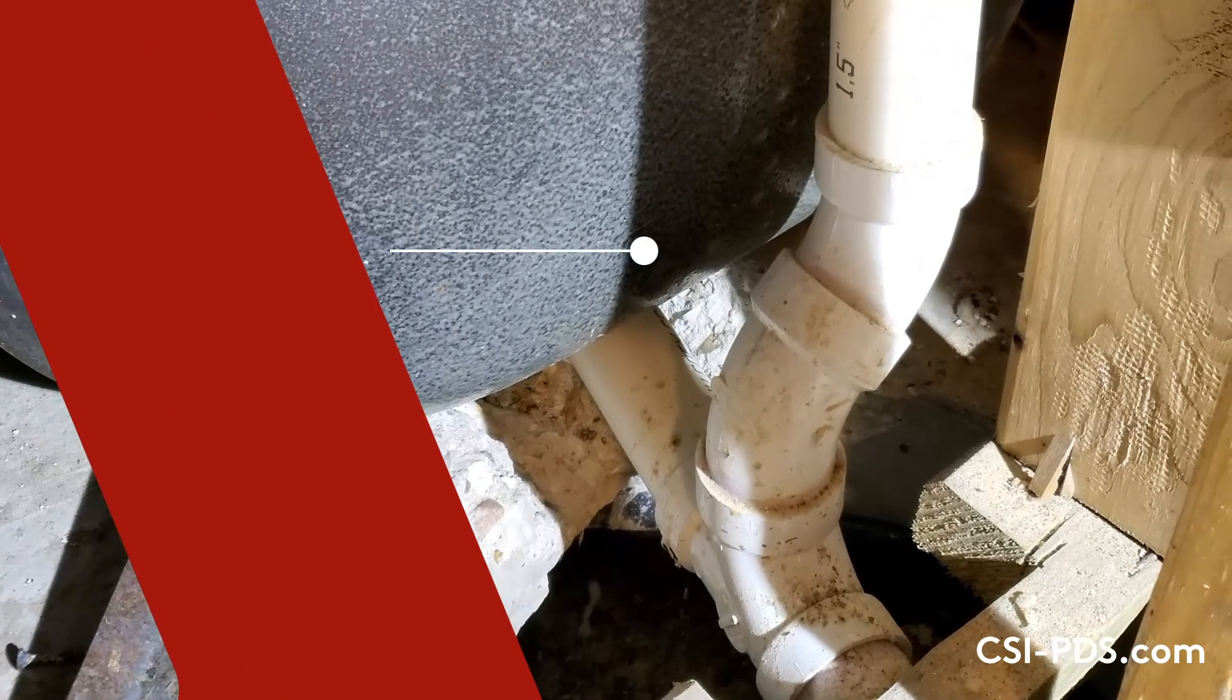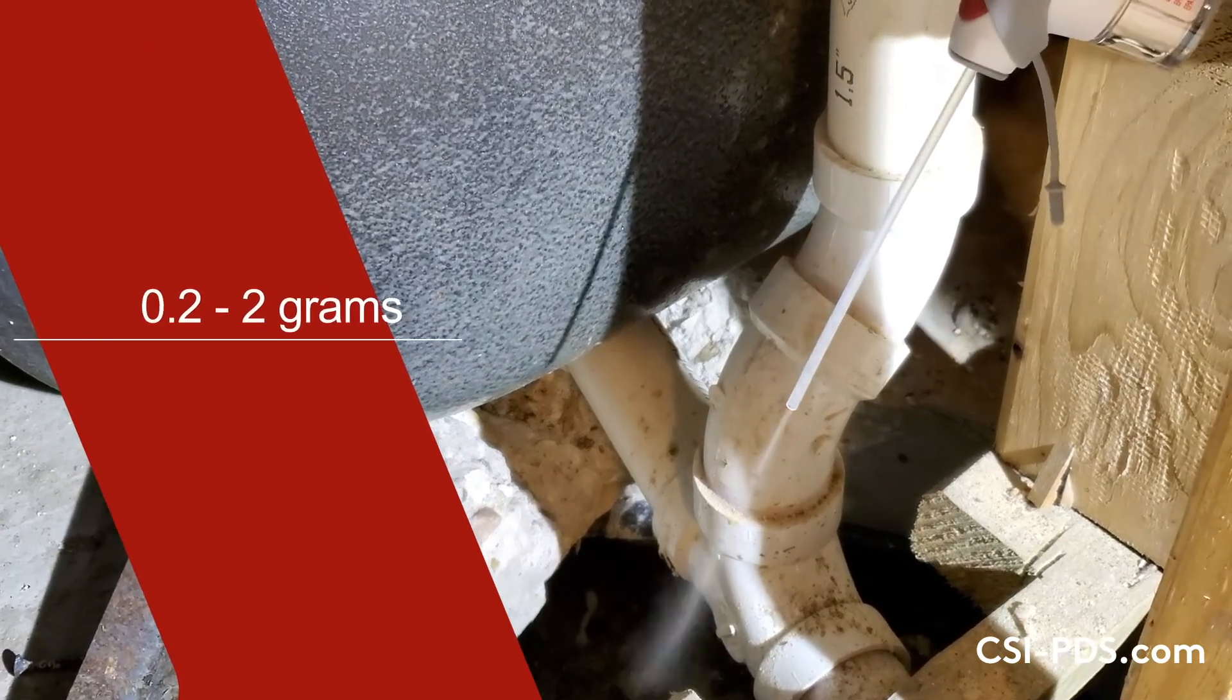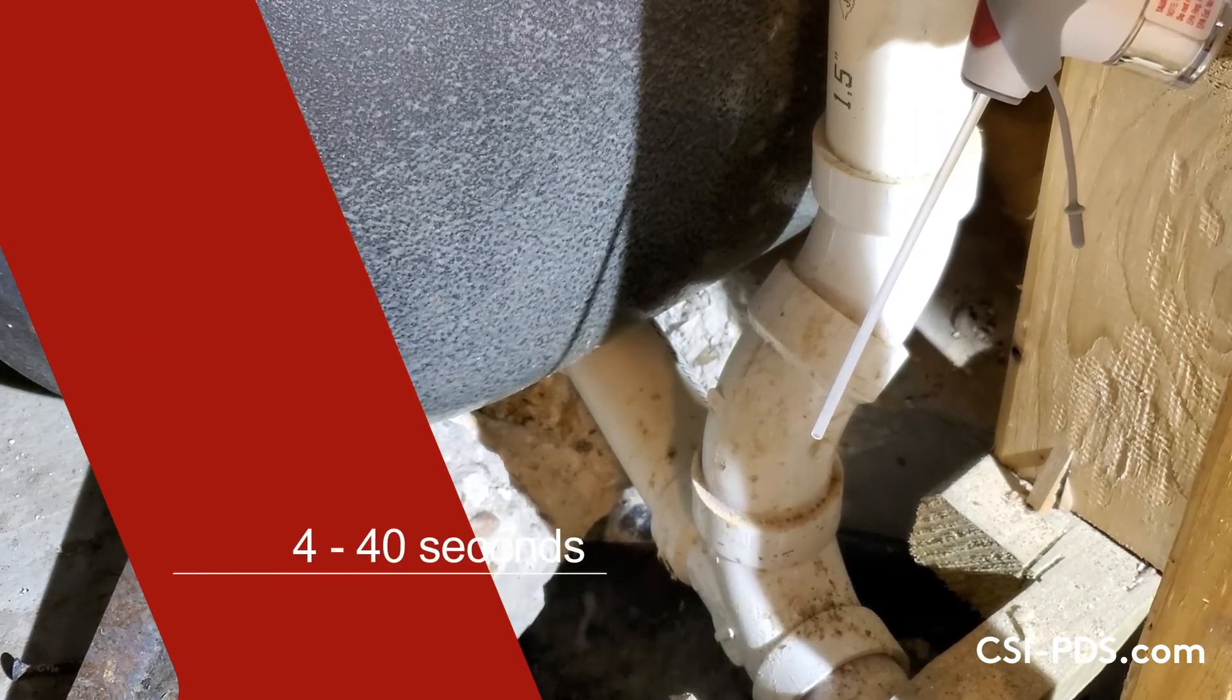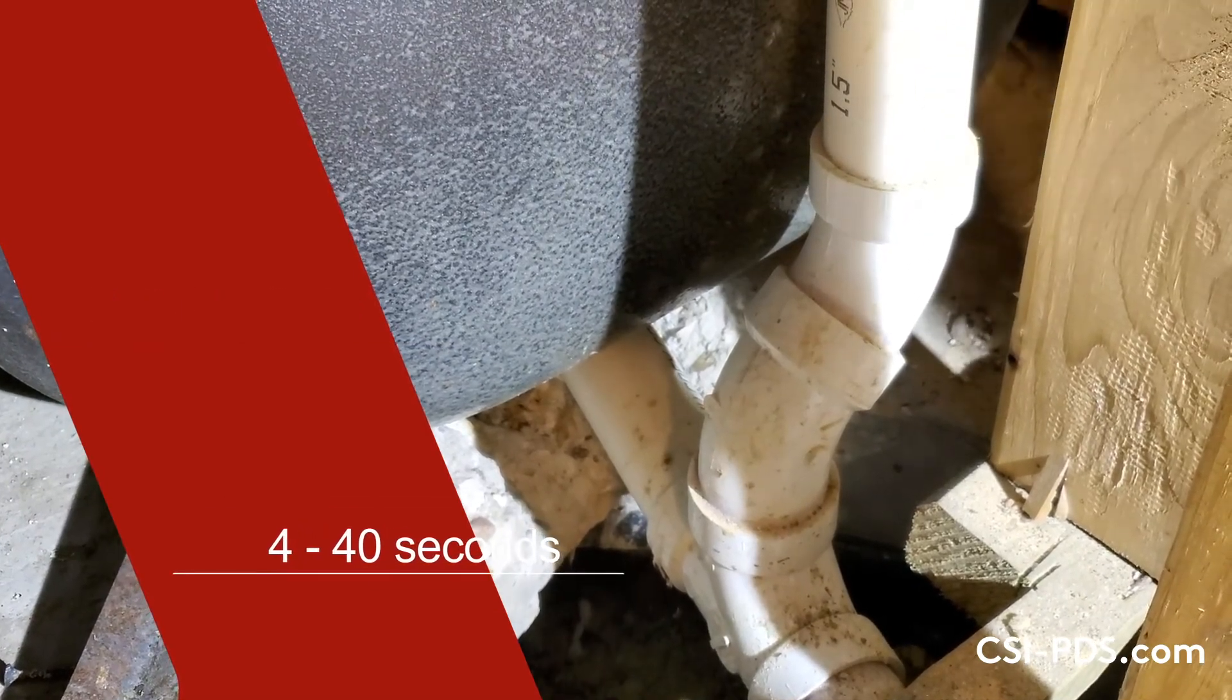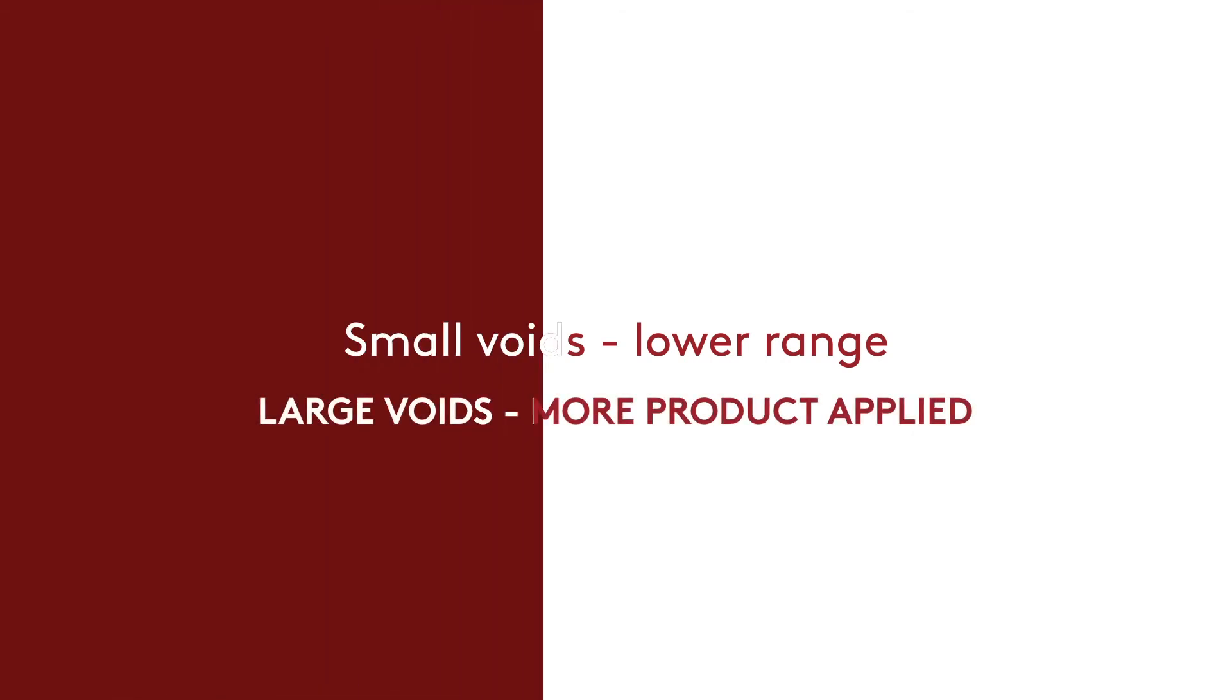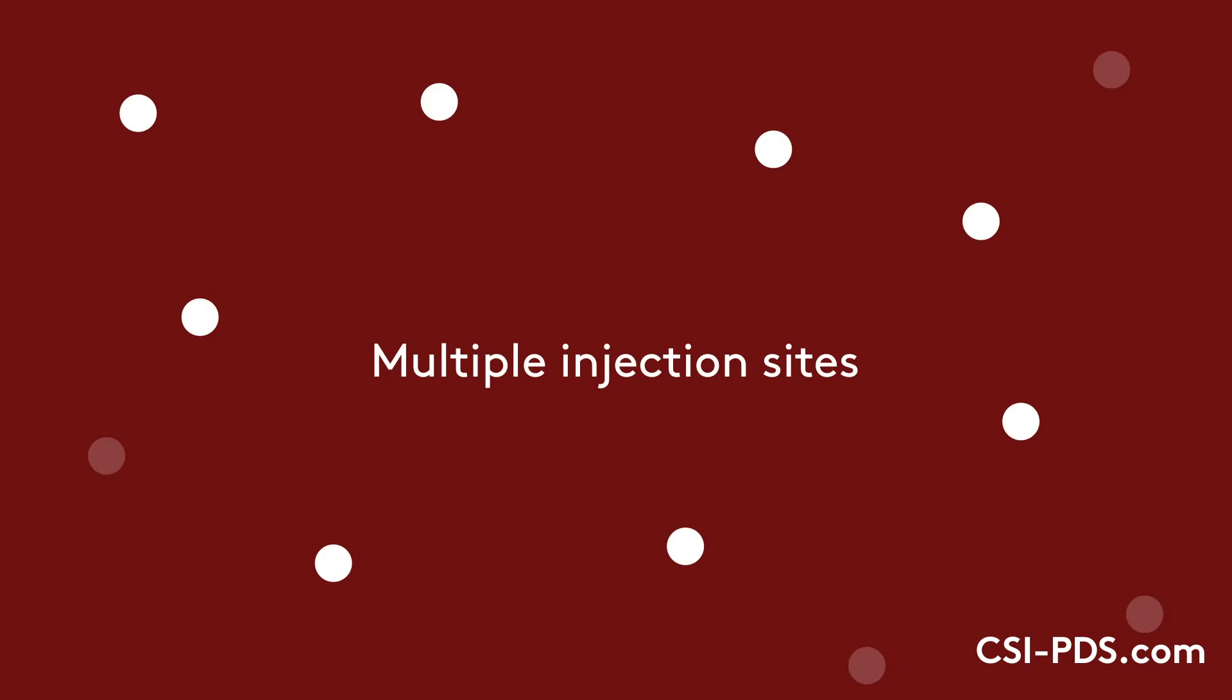Voids where termites are suspected should be treated at a rate of 0.2 to 2 grams of Taurus Dry or 4 to 40 seconds of trigger actuation time. For small voids, the low range should be used, and for larger voids, more product should be applied. Multiple injection sites may be needed in larger voids.